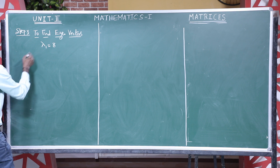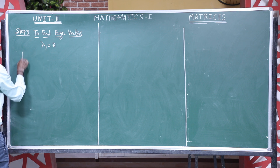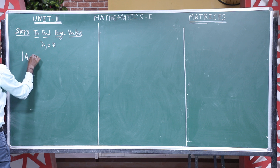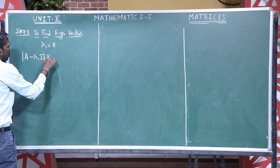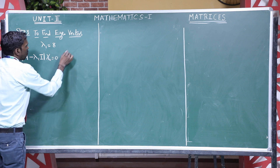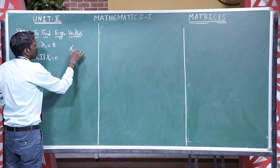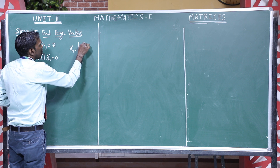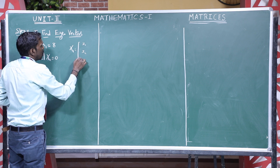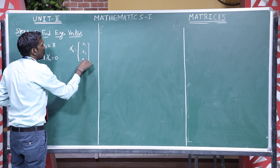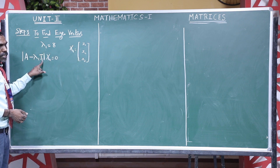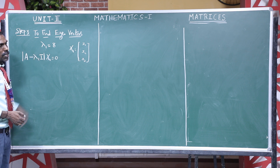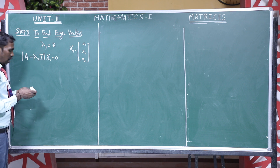First, find out the eigenvector for lambda 1 equal to 8. What is the formula here? A minus lambda 1 times I, multiplied by X1, equal to 0. Capital X1 is the column vector with components x1, x2, x3. Here A is our matrix, I is the identity matrix, and lambda 1 is 8. You can just substitute into the equation.